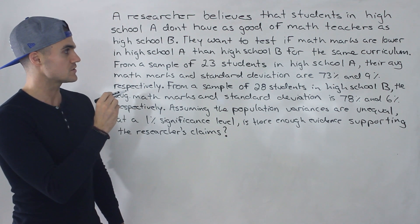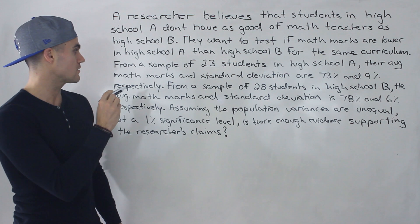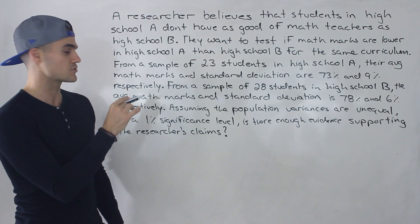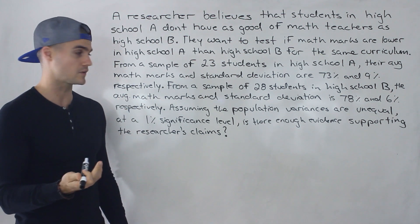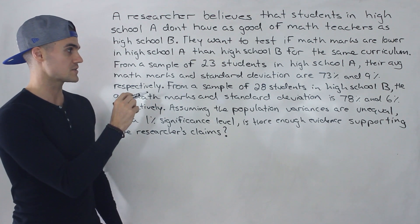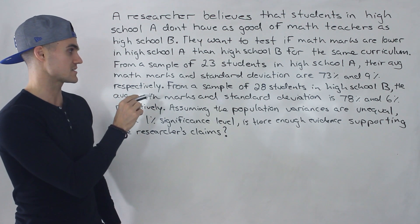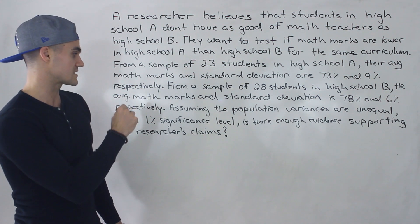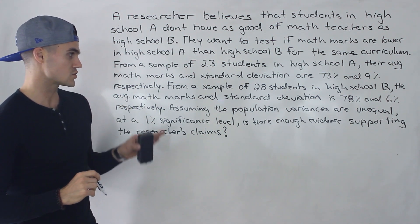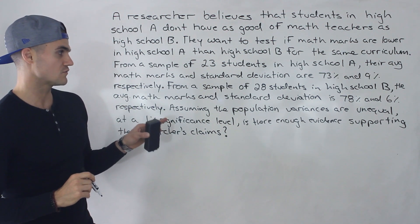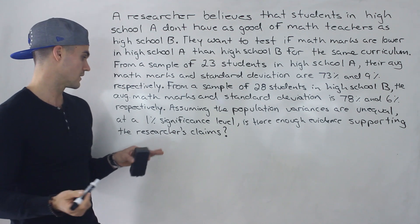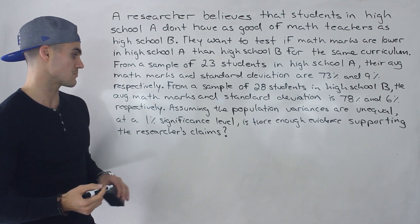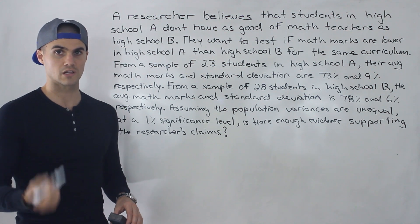From a sample of 23 students in high school A, their average math marks and standard deviations are 73% and 9% respectively. From a sample of 28 students in high school B, the average math marks and standard deviation are 78% and 6% respectively. Assuming the population variances are unequal, at a 1% significance level, is there enough evidence supporting the researcher's claims?